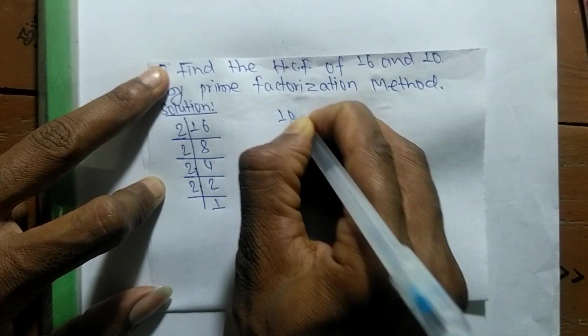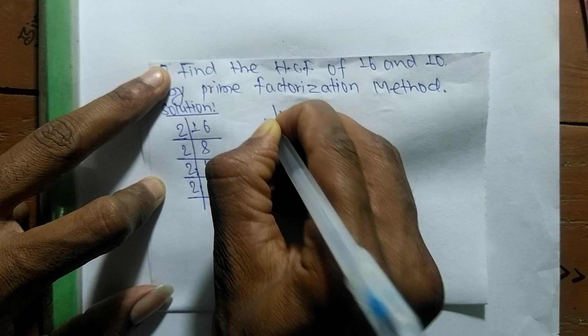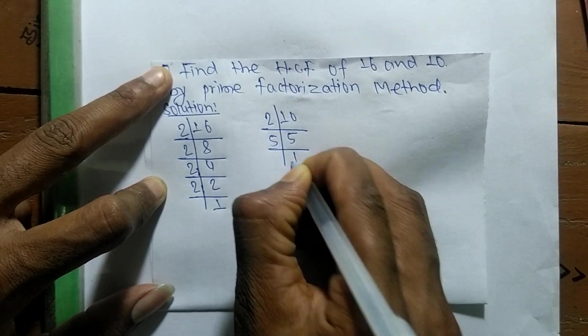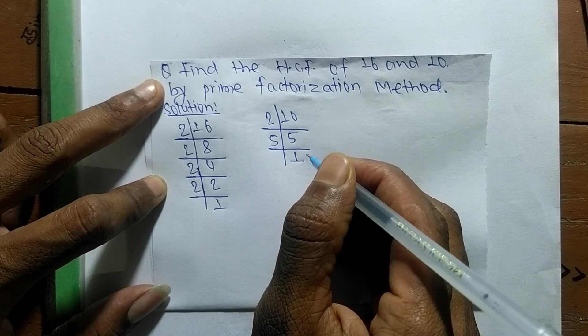In the same way, the prime factors of 10 are 2 times 5 equals 10, and 5 times 1 equals 5.